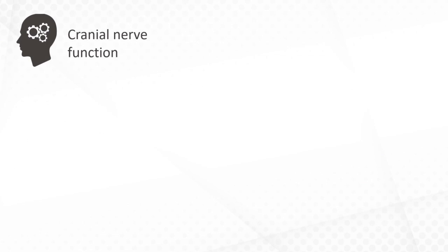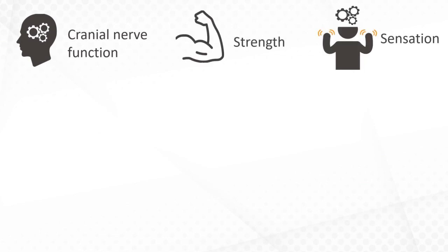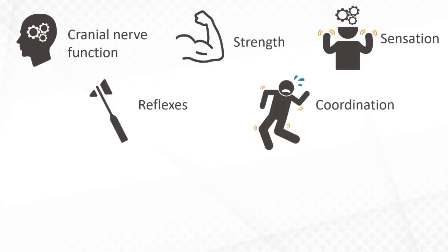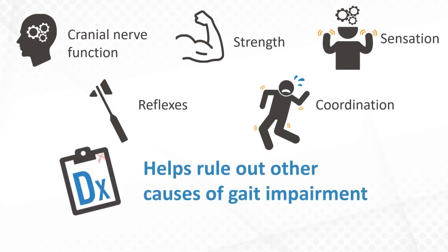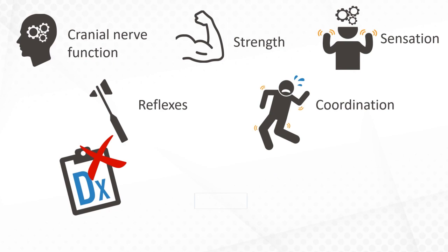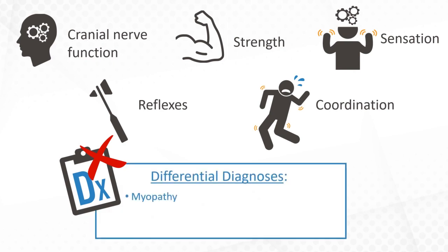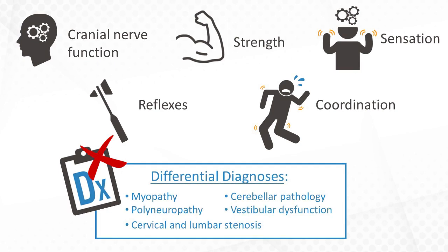In our case, we found normal cranial nerve function, strength, sensation, reflexes, and coordination on examination. This helps to rule out other common neurological causes of gait impairment. Here you'll find some other causes and the associated exam findings and typical gait appearance.